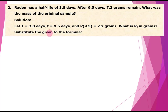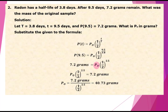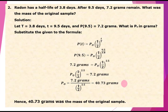Substitute the given into the formula P(t) equals P(0) times one-half raised to small t over capital T. We are given P(9.5) equals 7.2 grams. Plugging in, 7.2 equals P(0) times one-half raised to 9.5 over 3.8. Solving for P(0) and computing using a scientific calculator gives 40.73 grams. Hence, 40.73 grams was the mass of the original sample.